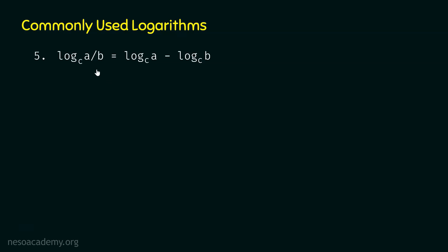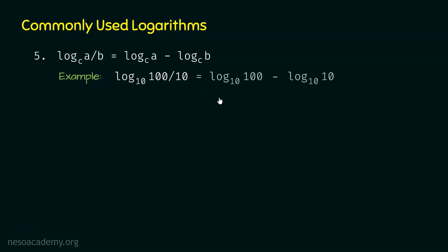The fifth logarithm is log A divided by B base C, which equals log A base C minus log B base C. When we have multiplication we add, and when we have division we subtract. For example, log 100 divided by 10 base 10 equals log 100 base 10 minus log 10 base 10, which is 2 minus 1, equal to 1.